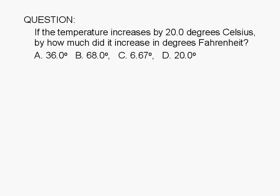If the temperature increases by 20.0 degrees Celsius, by how much did it increase in degrees Fahrenheit? A: 36.0 degrees, B: 68.0 degrees, C: 6.67 degrees, or D: 20.0 degrees.